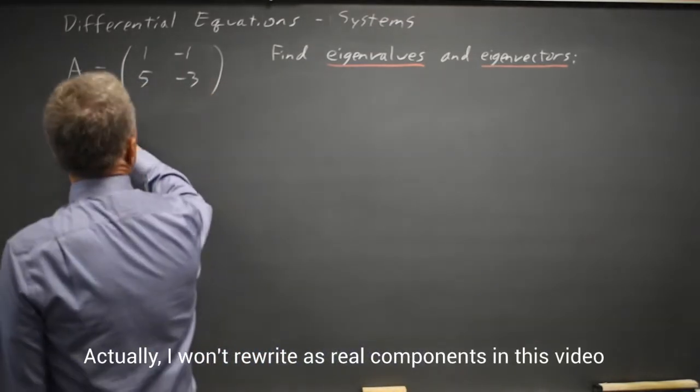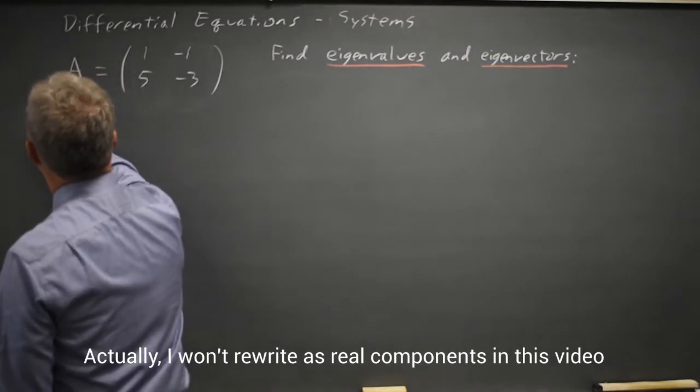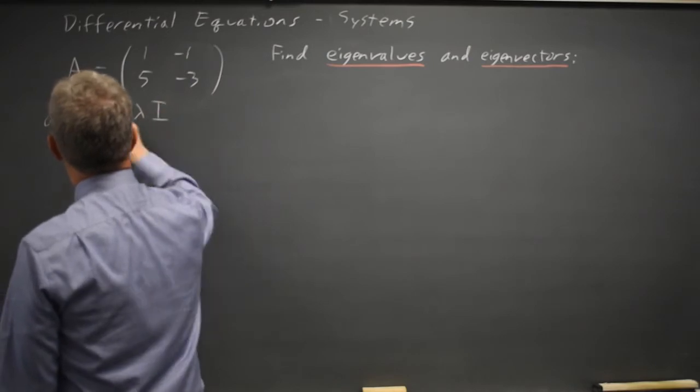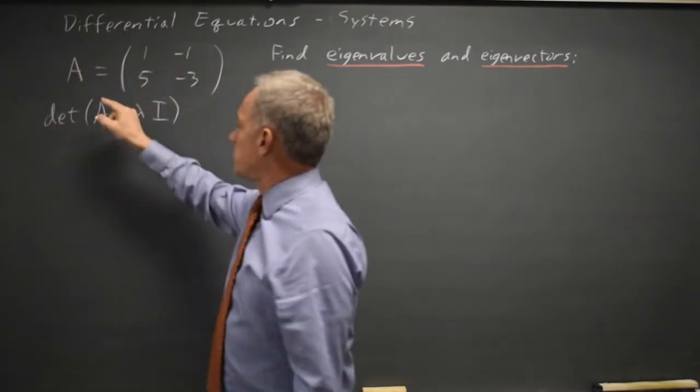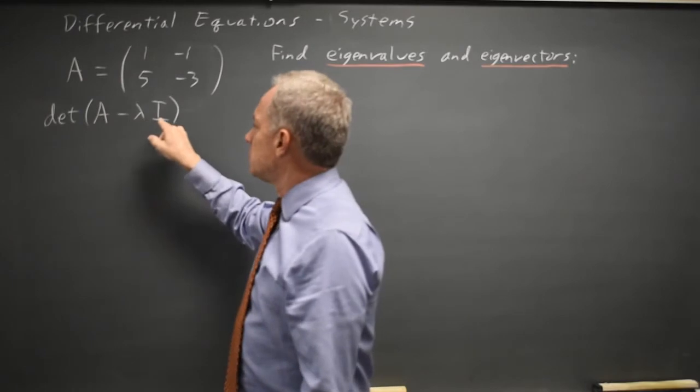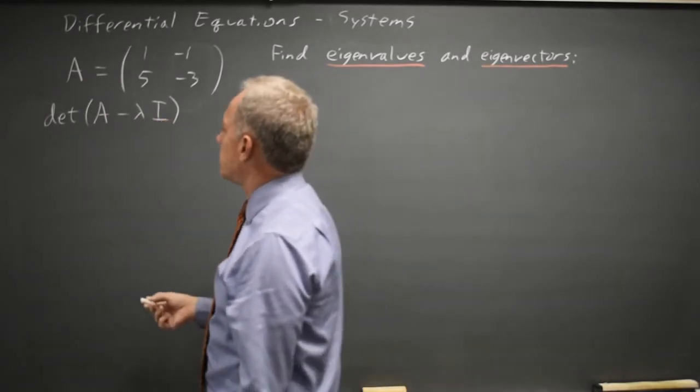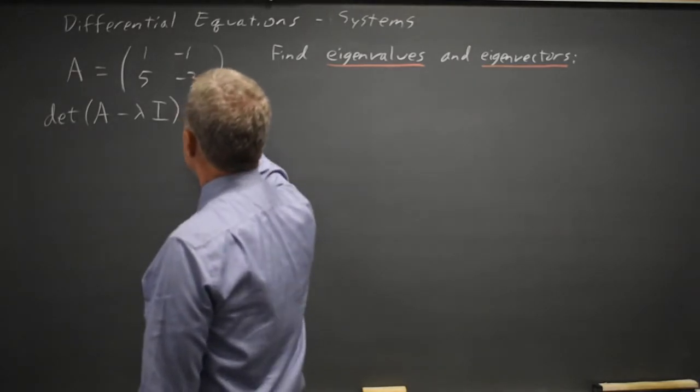The eigenvalues are found by setting the determinant of matrix A minus lambda times identity, where matrix A is a square matrix, identity is the same size identity matrix and lambda is a constant, and we're setting that determinant equal to 0.